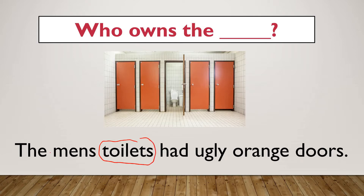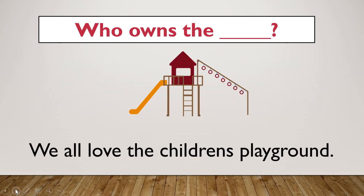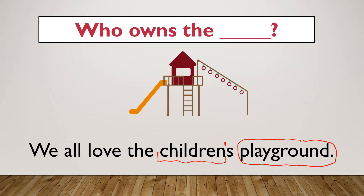What about here: 'The men's toilets had ugly orange doors.' Who owns the toilets? The men own the toilets, so my apostrophe goes after 'men.' We all love the children's playground — who owns the playground? The children own the playground, so put your apostrophe after 'children.'